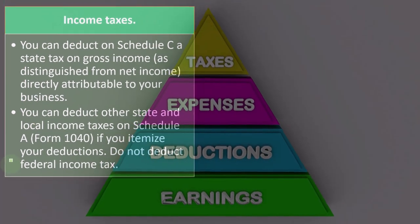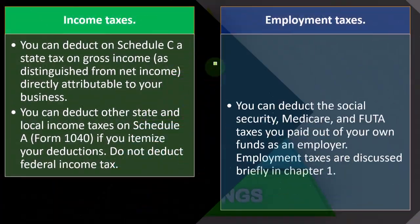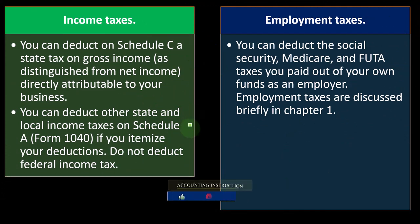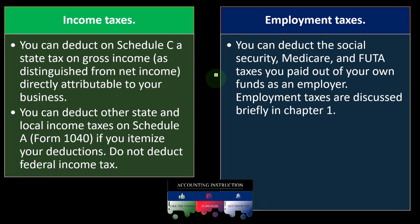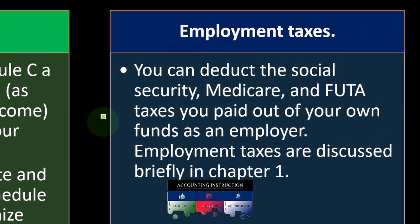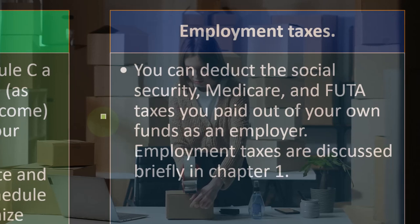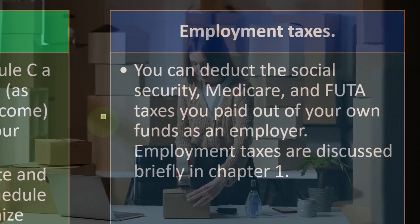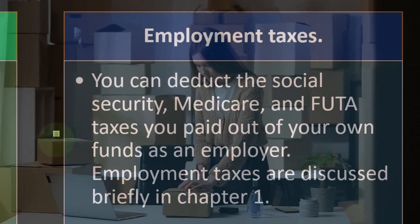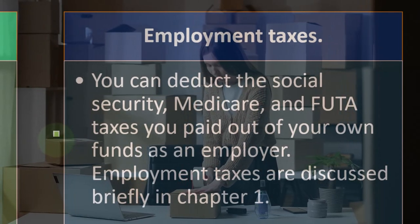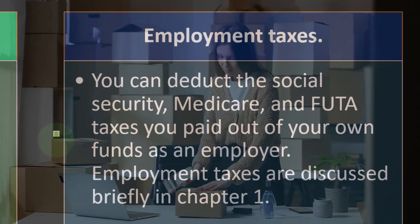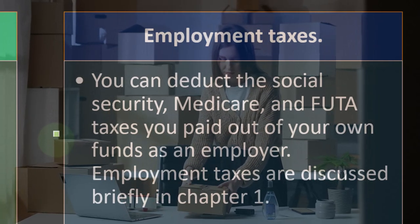You don't deduct the federal income taxes — that we know. For employment taxes, you can deduct the Social Security, Medicare, and FUTA taxes you paid out of your own funds as an employer. This is distinguished from the Medicare and Social Security you pay on your self-employment tax. So there's a distinction between taxes paid as a sole proprietor and taxes paid on behalf of payroll for employees.